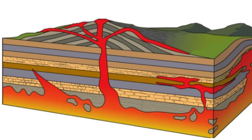Bathleths typically form as the result of intense geological activity, such as subduction or continental collision. When magma rises from deep within the Earth's mantle and begins to cool and solidify beneath the Earth's surface, it can form a bathleth. The slow cooling of the magma allows large mineral crystals to form, creating a coarse-grained texture that distinguishes bathleths from other types of igneous rocks.